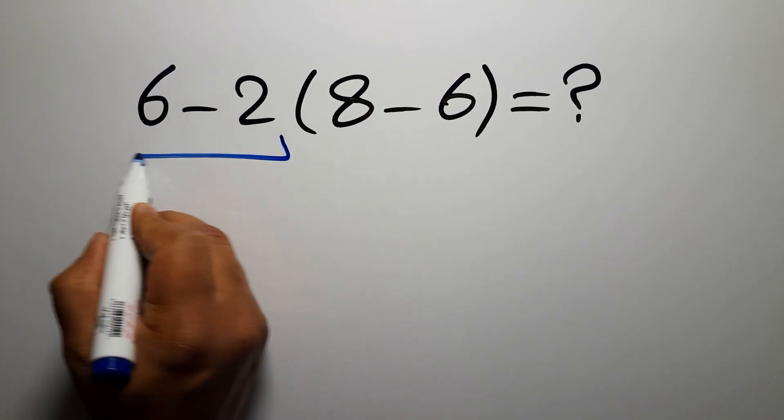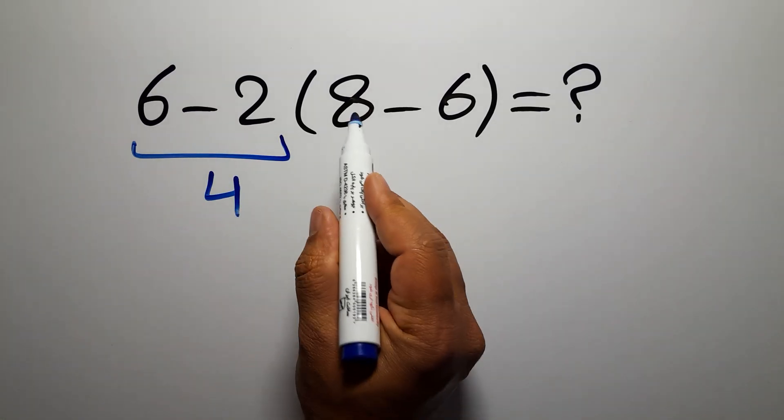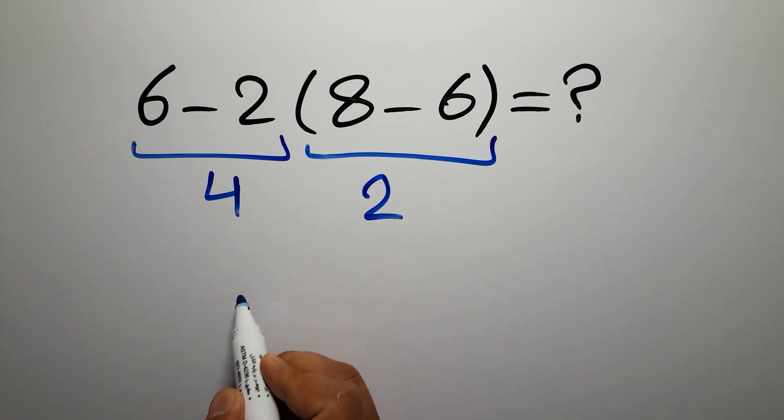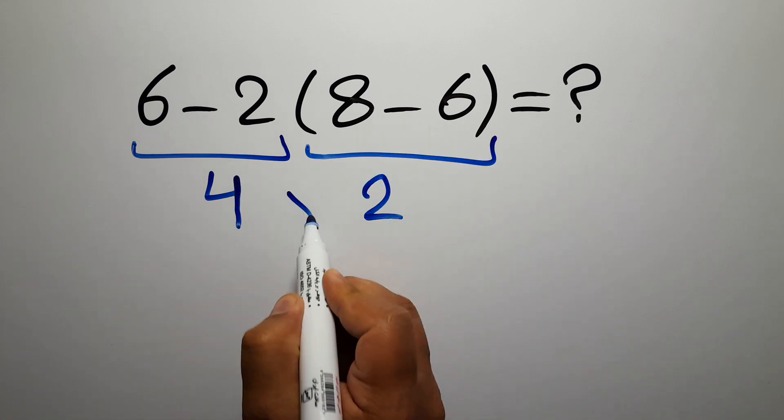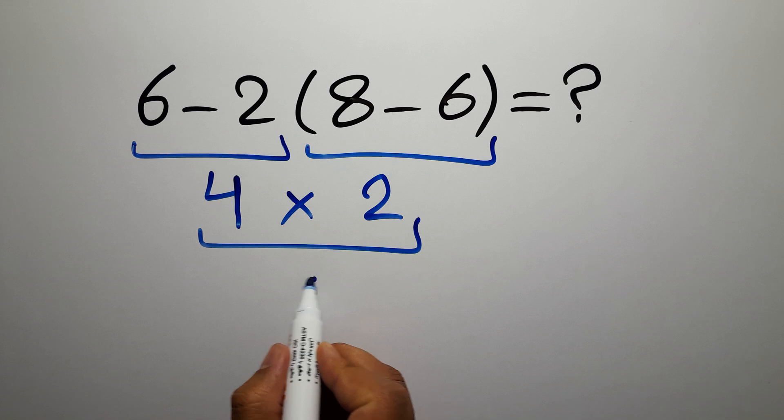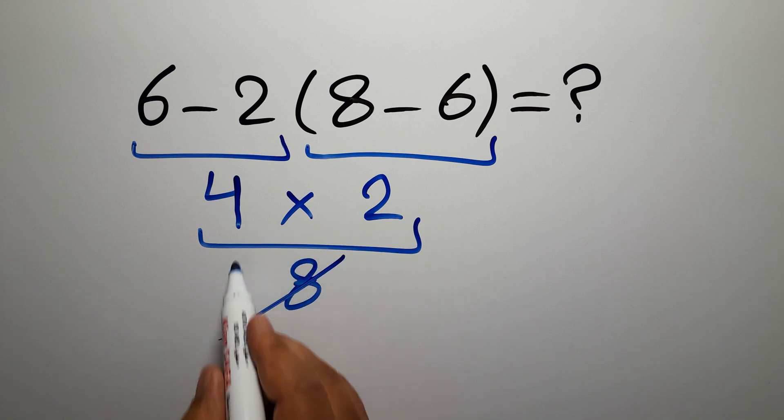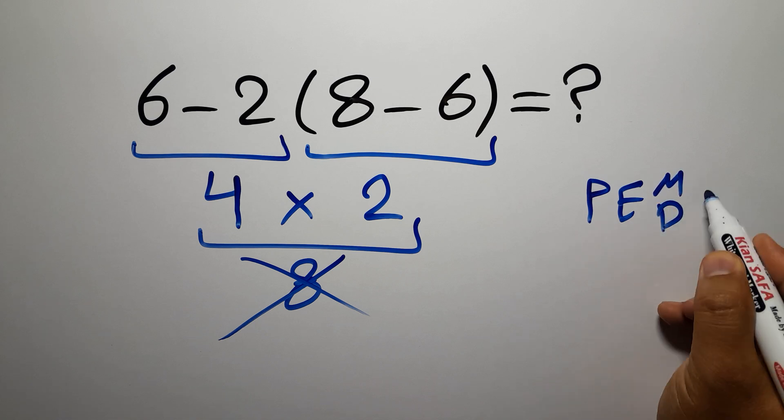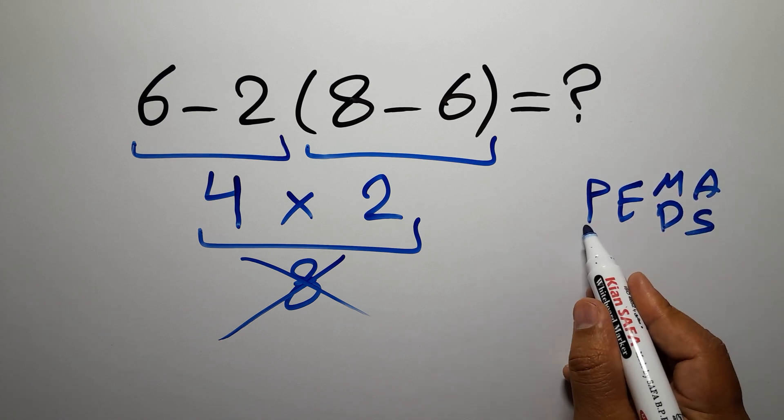6 minus 2 gives us 4 and 8 minus 6 gives us 2, so 4 times 2 which equals 8. But this answer is not correct because according to the order of operations which is PEMDAS, P stands for parentheses.